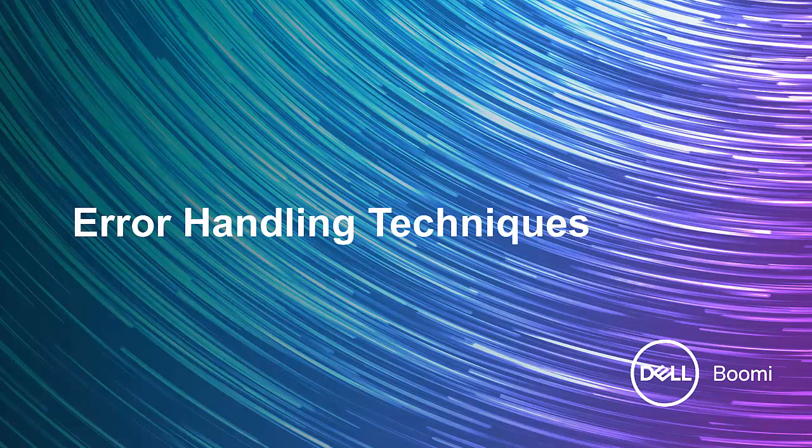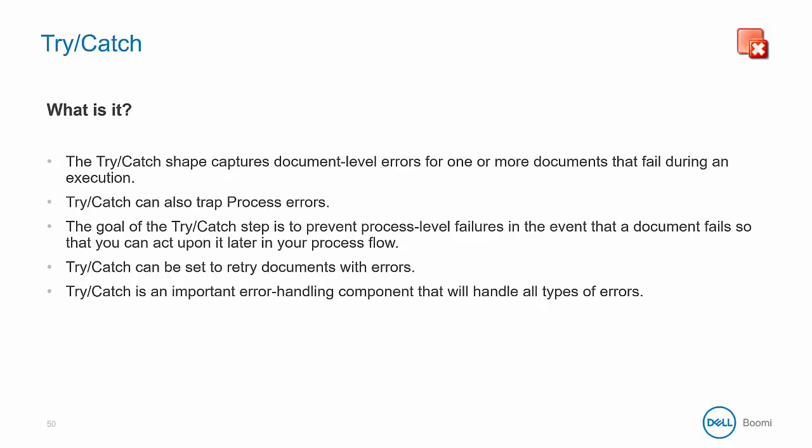Now that we have reviewed a number of concepts regarding errors and become familiar with them, let's review some techniques to help us plan for and work with errors in our process design. The try-catch shape is the most common way to handle exceptions in your process. It captures all types of document-level and process-level errors for one or more documents that fail during an execution. The goal of the try-catch step is to prevent errors by capturing them so that you can act upon them later or retry documents that have errors.